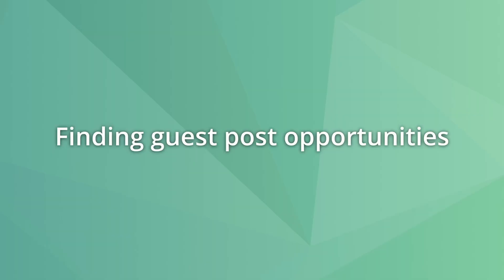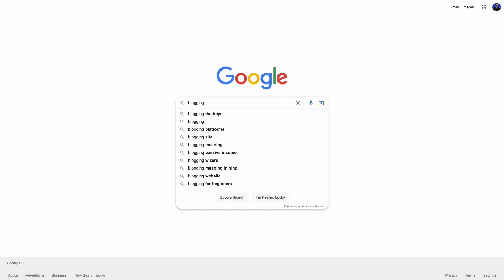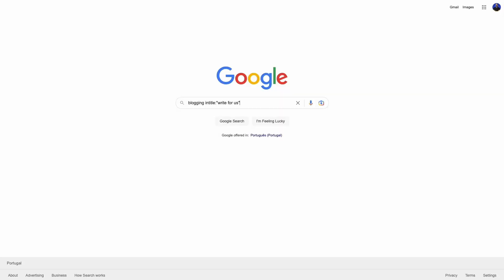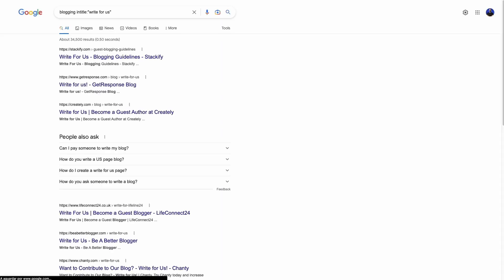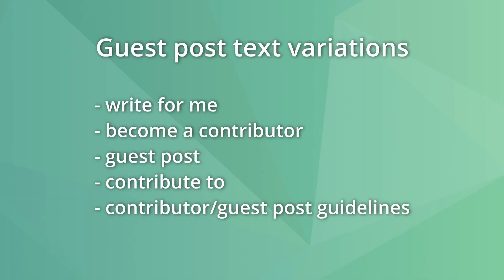Similarly, search operators will also uncover guest post opportunities. Use the expression: topic intitle:"write for us". The intitle operator makes Google only show pages with a word or words from the query in the title of the page. There are many other title variations for finding guest post opportunities, as shown on the screen.